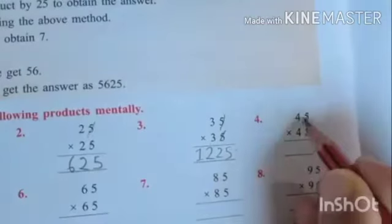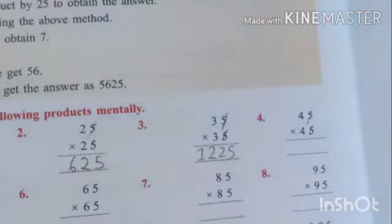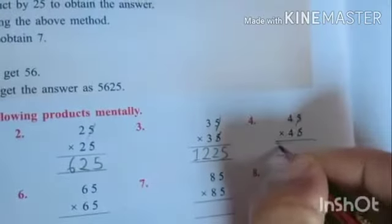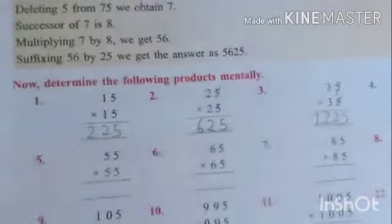Same in this. 5 ko cross kiya, 4 ka next number 4, 5 ja, 20. You will get 20, then 2, 5 suffix.